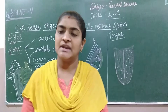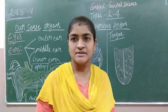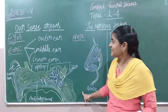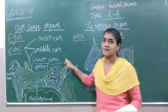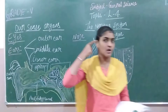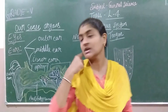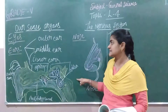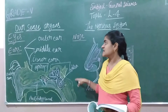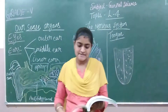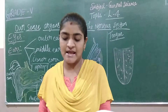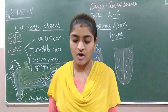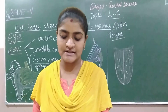Now we will move on to the next sense organ, that is the ears. This is a structure of an ear. Here we have three parts — the outer ear, the middle ear, and the inner ear. Ears help us to hear different sounds around us.